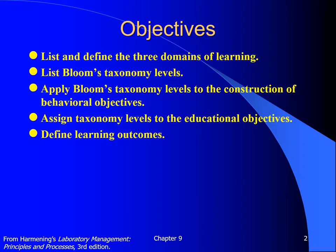Following successful completion of this chapter, the learner will be able to: list and define the three domains of learning; list Bloom's taxonomy levels; apply Bloom's taxonomy levels to the construction of behavioral objectives; assign taxonomy levels to the educational objectives; and define learning outcomes.